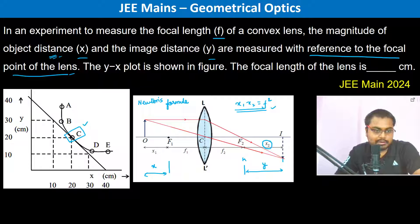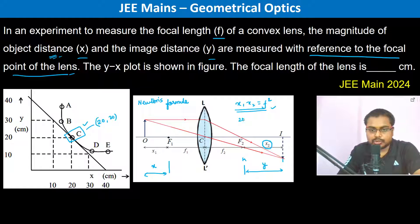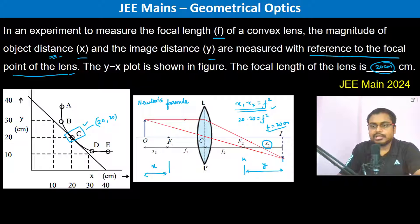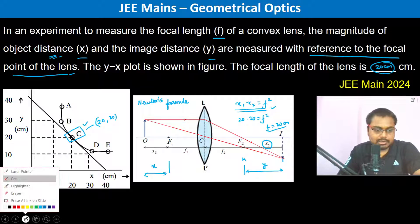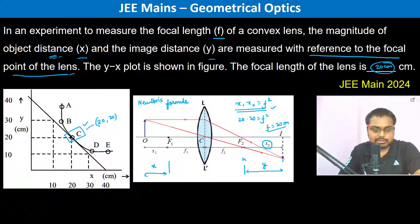We can see that point C on the graph is at (20, 20) — both x and y are 20. So using Newton's formula: 20 times 20 equals f squared, which gives f equals 20 centimeters.